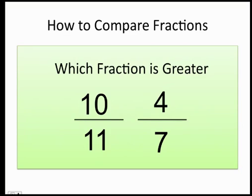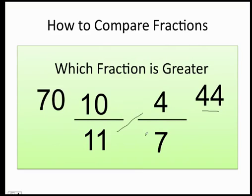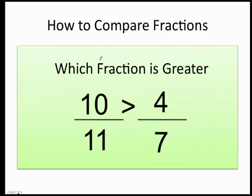Alright, remember I do eleven times four which is forty-four, and then I do ten times seven which is seventy. Which one is greater, seventy or forty-four? You got the answer. Ten over eleven is greater than four over seven.